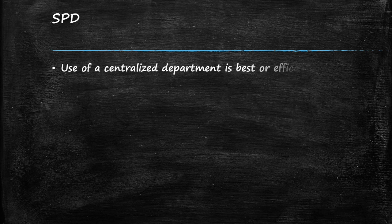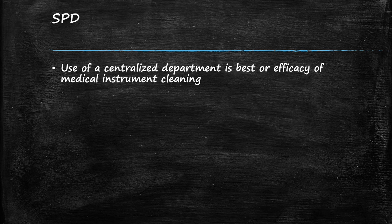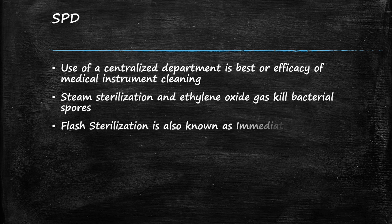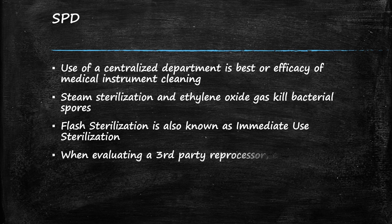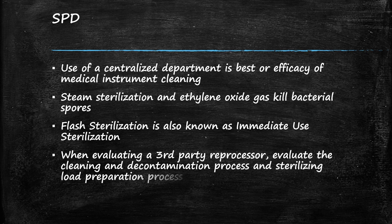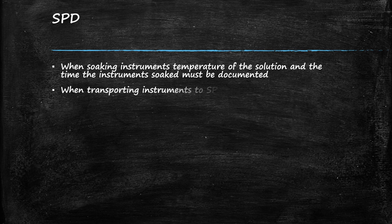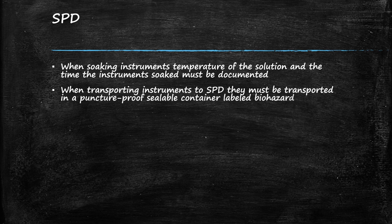SPD, or the Sterile Processing Department: use of a centralized department is best for efficacy of medical instrument cleaning. Steam sterilization and ethylene oxide gas kill bacterial spores. Flash sterilization is also known as immediate use steam sterilization, or IUSS. When evaluating a third-party reprocessor, evaluate the cleaning and decontamination process and sterilizing load preparation process. When soaking instruments, the temperature of the solutions and the time the instrument soaked must be documented. When transporting instruments to the Sterile Processing Department, they must be transported in a puncture-proof sealable container labeled biohazard.